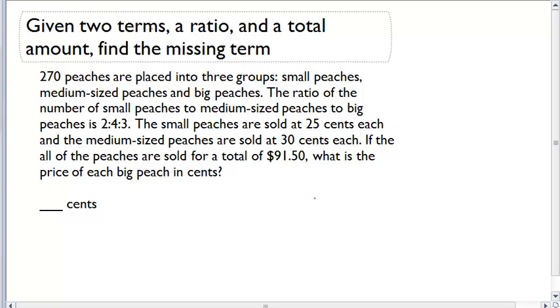270 peaches are placed into three groups. So right away I have 270 total peaches. I've got small peaches, I've got medium-sized peaches, and I've got big peaches.